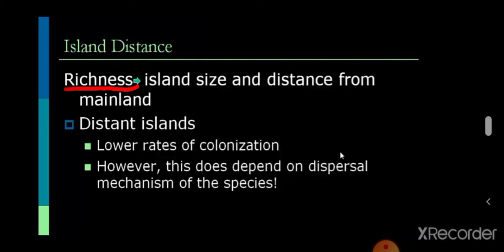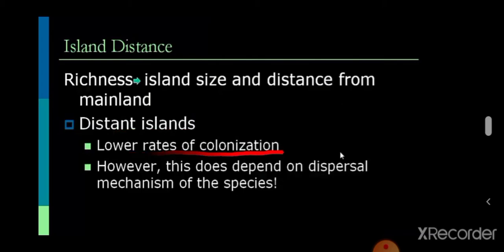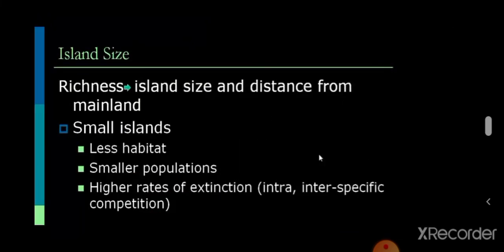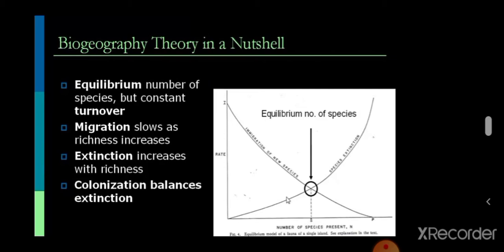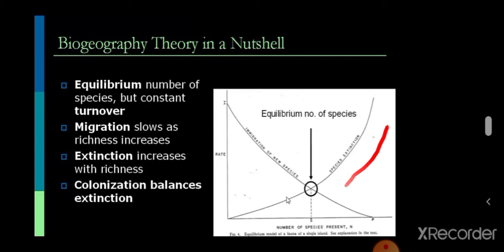Species richness is the number of individual species in a particular area. When an island is in a distant position, there will be a lower rate of colonization. This doesn't depend on the dispersal mechanism of the species. When an island is small, there is less habitat and a smaller population, leading to a high rate of extinction due to intra- and inter-specific competition. The theory explains that the number of species inhabiting an island is based on the dynamic equilibrium between immigration of new species and extinction of previously established species.